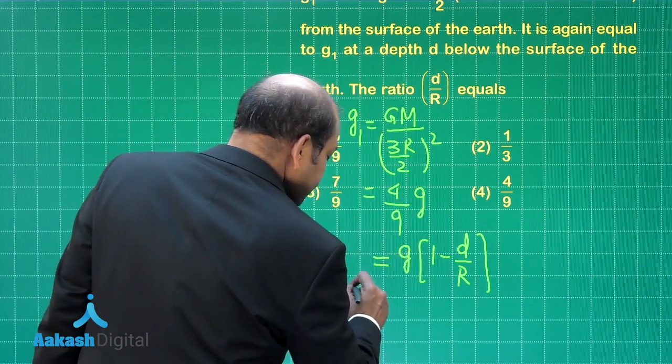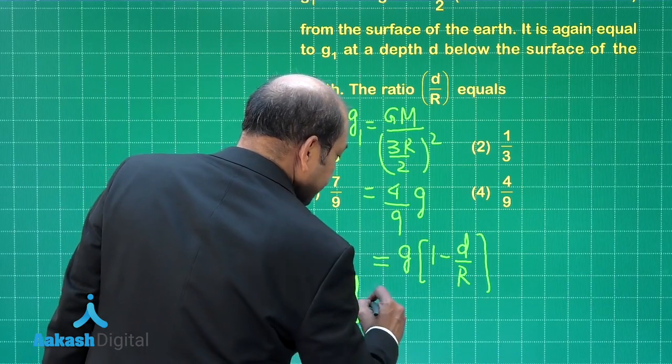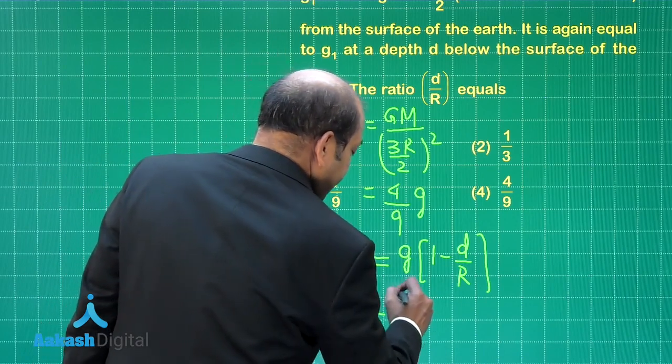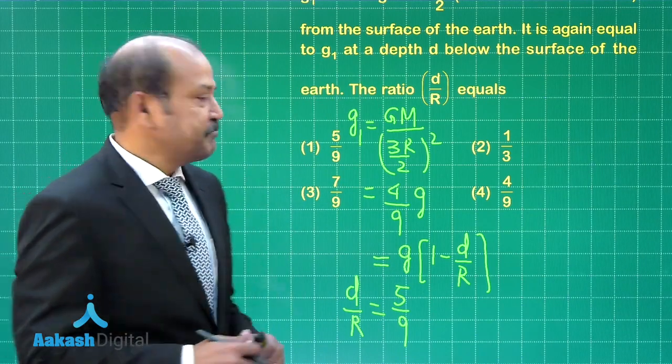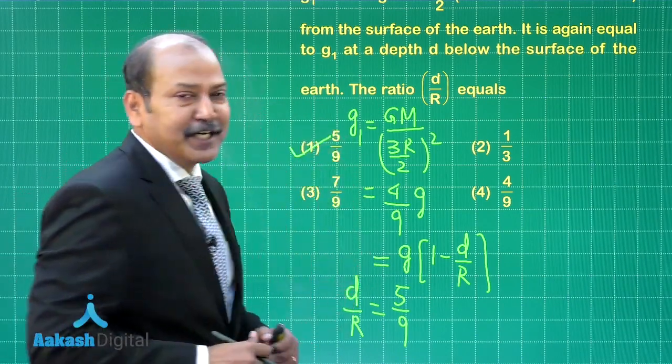If we solve it for d by r, the value of d by r then comes out as 5 by 9, which means for this particular question option 1 is the correct option. Let us now go to question number 15.